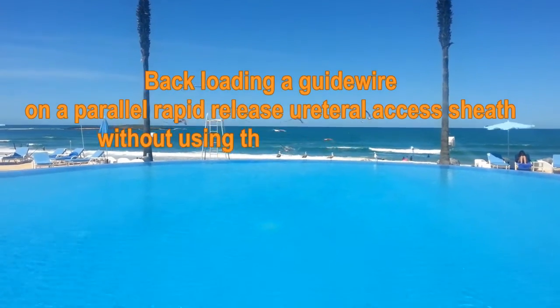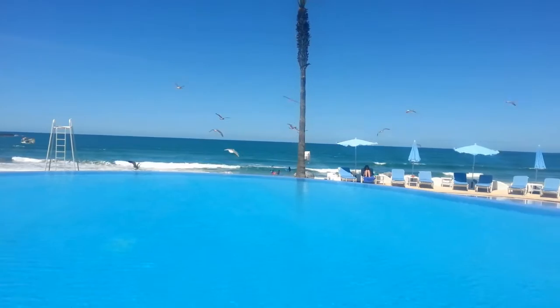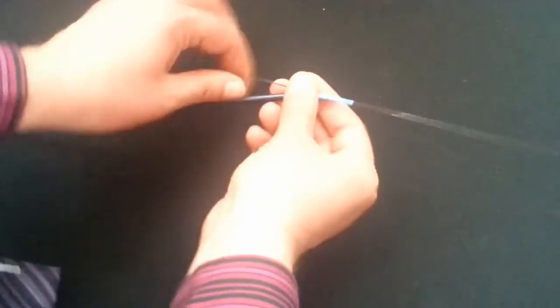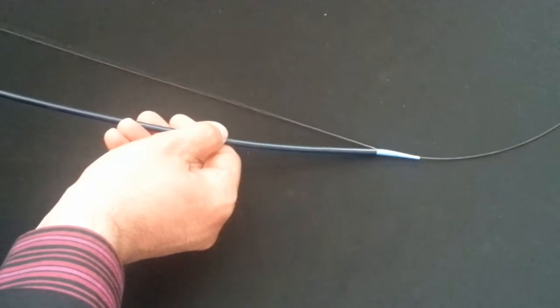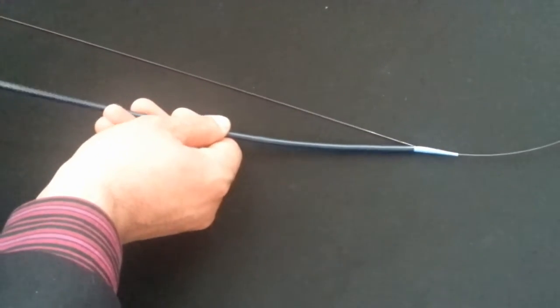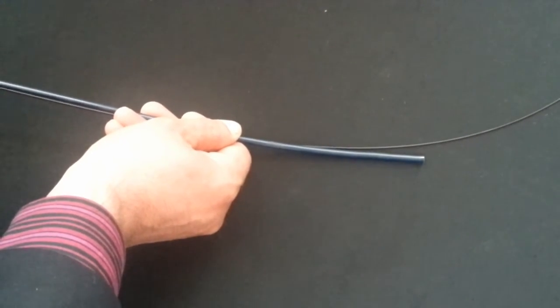The parallel rapid-release ureteral access sheath is a good way to transform the working wire to a safety guide wire. The guide wire is passed in a split of the first three or four centimeters of the dilator. When the dilator is retrieved, the guide wire is outside the sheath.